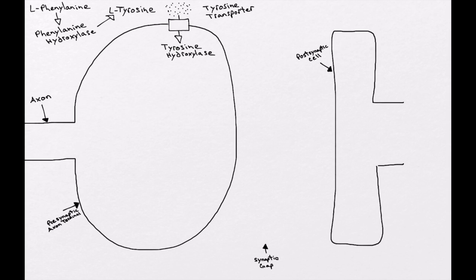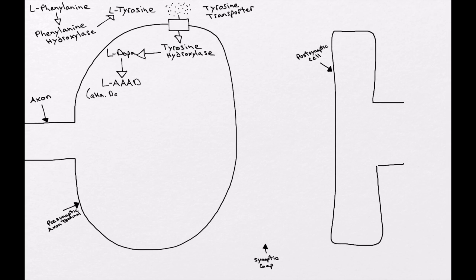Once inside the axon terminal, tyrosine is converted by the enzyme tyrosine hydroxylase into L-DOPA, also known as levodopa or 3,4-dihydroxyphenylalanine. L-DOPA is then broken down by L-aromatic amino acid decarboxylase, also known as DOPA decarboxylase, into functional dopamine — the end product in this synapse. Dopamine is also a precursor for norepinephrine and ultimately epinephrine elsewhere in the body.